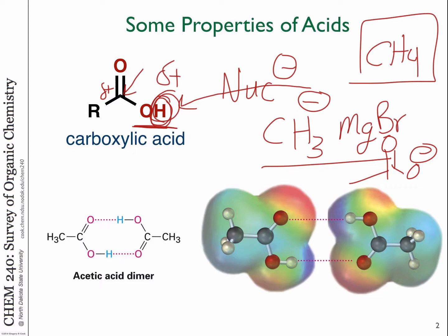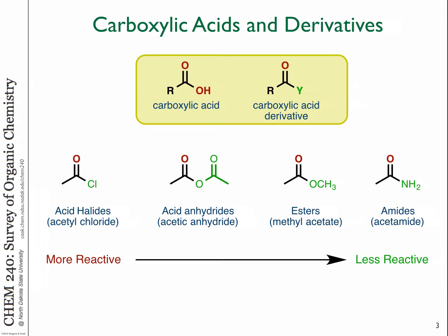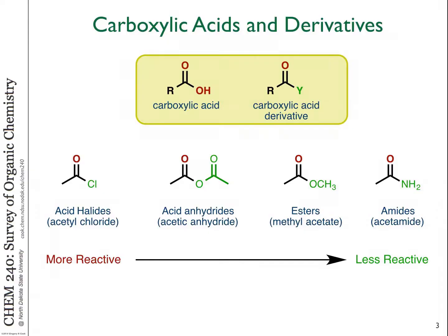If we really want to do chemistry with the carboxylic acid, we need to think about using carboxylic acid derivatives where we don't have that acidic proton — then we can do other kinds of chemistry. These functional groups were introduced last time. Some are more reactive and some are less reactive; when I talk about reactivity, I mean reactions at the carbonyl carbon. Because they don't have the OH group with the acidic proton, something like a Grignard reagent will react with an ester at the carbonyl carbon, breaking the C=O double bond, then kicking off a leaving group and adding a second Grignard.